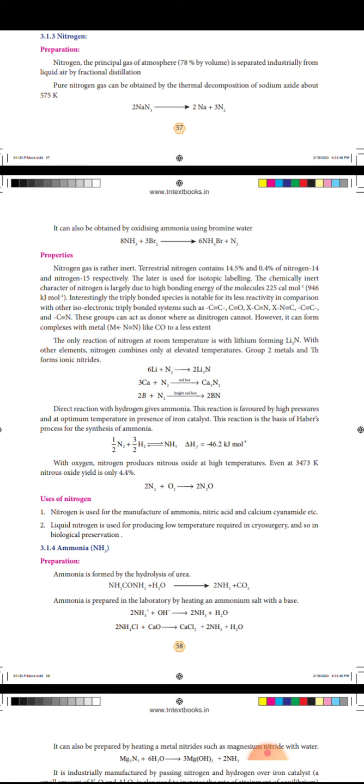It can also be obtained by oxidizing ammonia using bromine water: 8NH3 plus 3Br2 gives 6NH4Br plus N2.